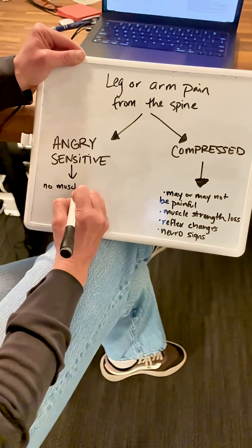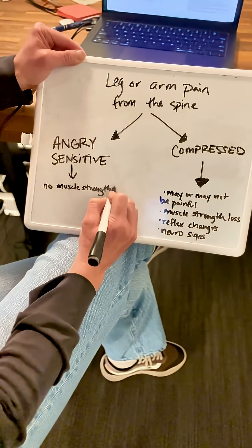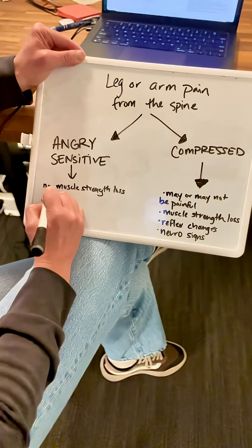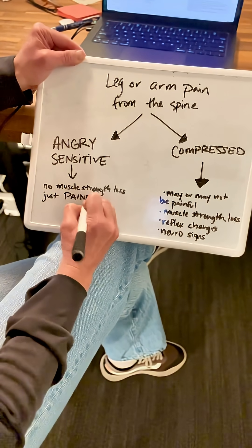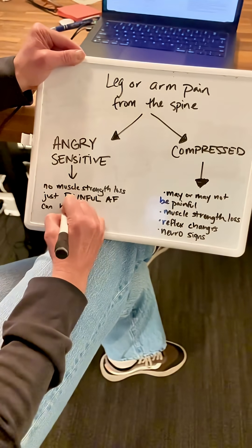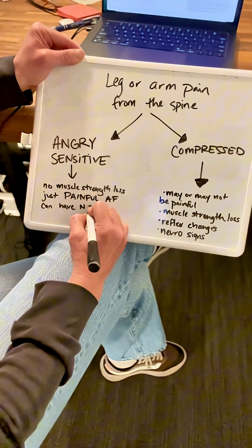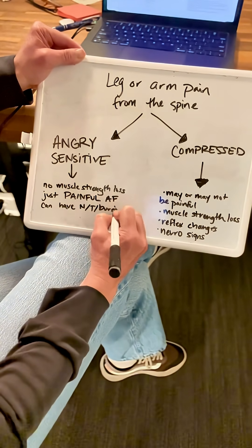An angry and sensitive nerve usually is just pretty painful. You don't have the neuro signs, like you don't have a strength loss, you don't have the reflex changes or any of that, but it can be extremely painful and annoying to deal with. And you can still have numbness, tingling, and burning with this one.